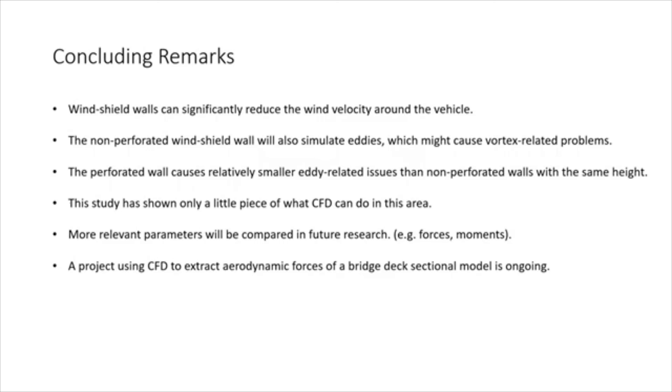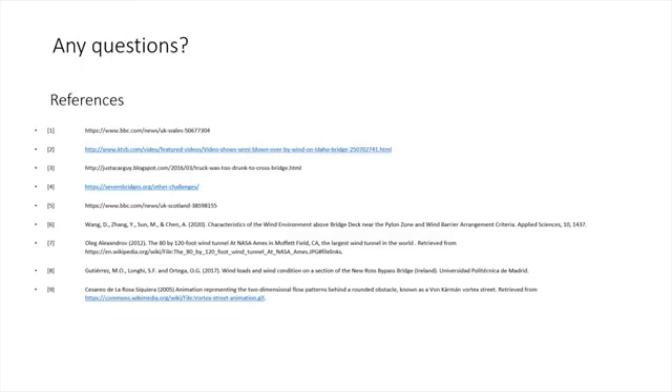Windshield walls can significantly reduce the wind velocity around the vehicle. That's obviously the first conclusion we have drawn from the simulations. And the second one is the non-perforated windshield wall also stimulates eddies, which might cause vortex-related problems. And also the perforated wall causes relatively smaller eddy-related issues than the non-perforated wall with the same height. Remember this study just shows a very little piece of what CFD can do in this area. And more relevant parameters will be compared in future research, for example, force moments and flutter derivatives or other parameters. A project using CFD to extract aerodynamic forces of the bridge deck section model is currently ongoing. And that is basically all of my presentation. Thank you for listening and I will be very happy to answer any questions. Thank you.